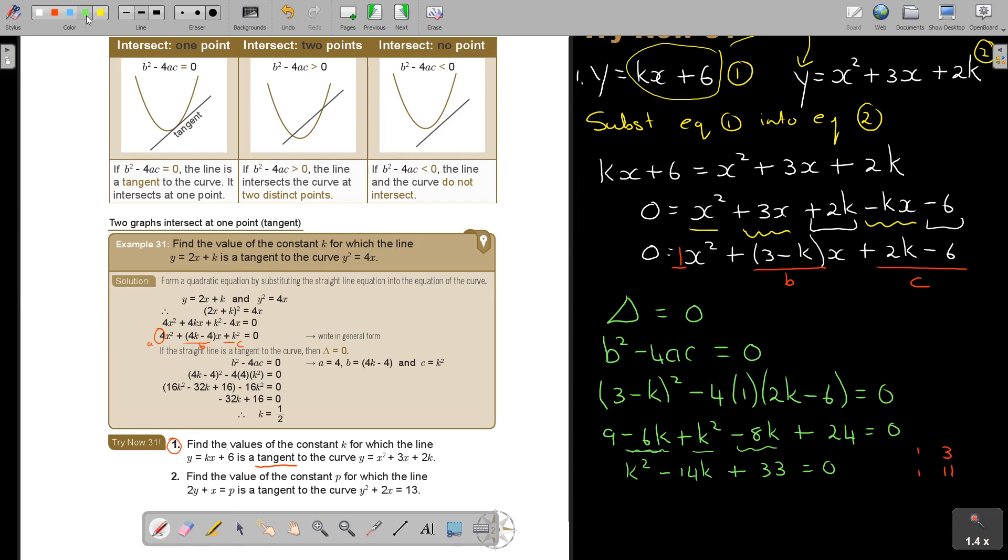I'm just going to have, the signs are the same, same as this one. Then it's going to be K minus 3, K minus 11 equals 0. Therefore, K is equal to 3 or K is equal to 11. Find the values, so there's two values. K is 3 or K is 11. And that's how you do it.